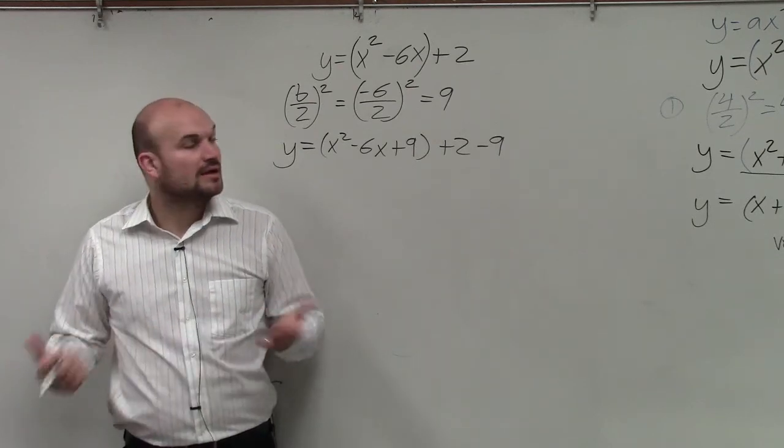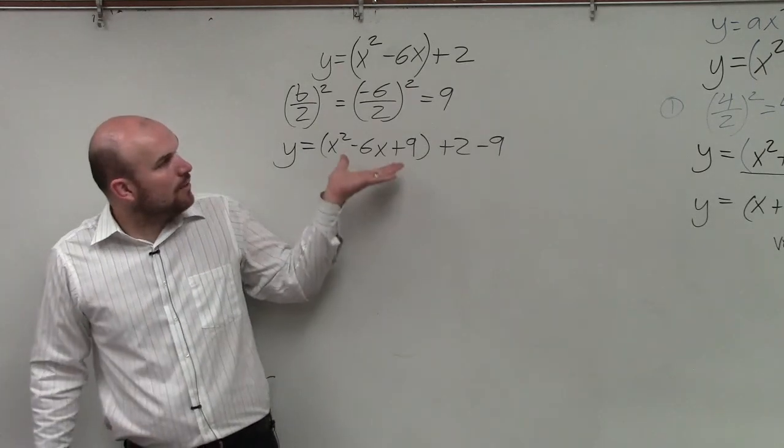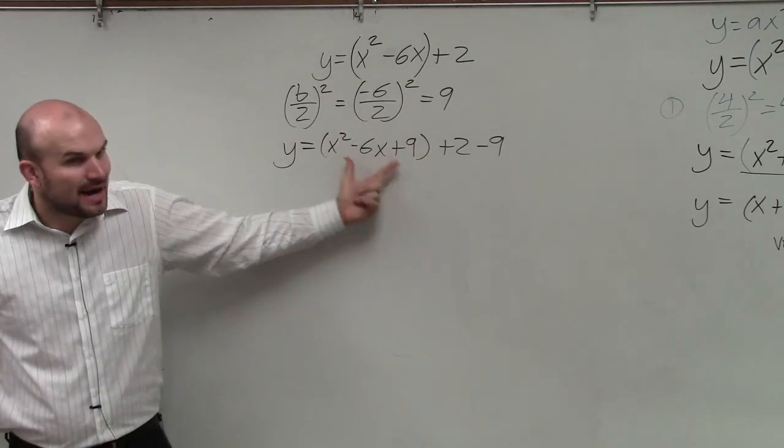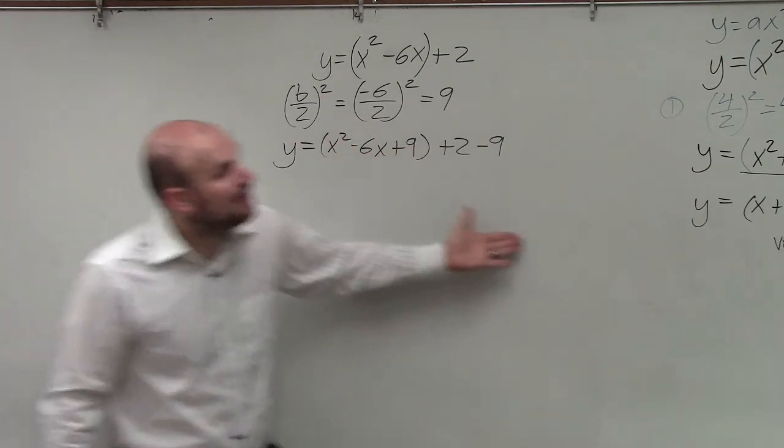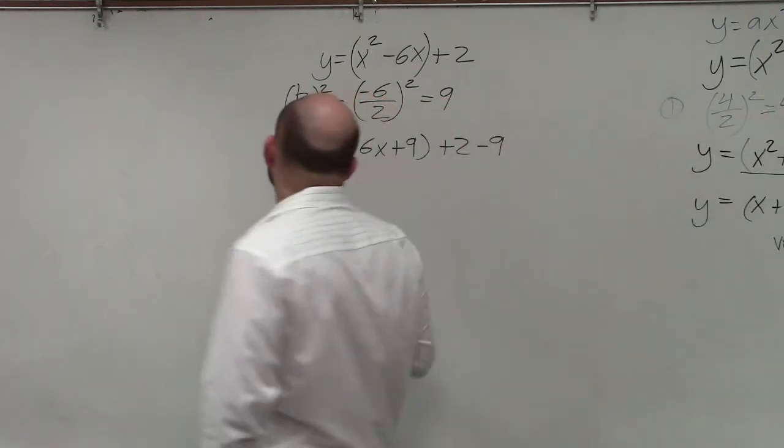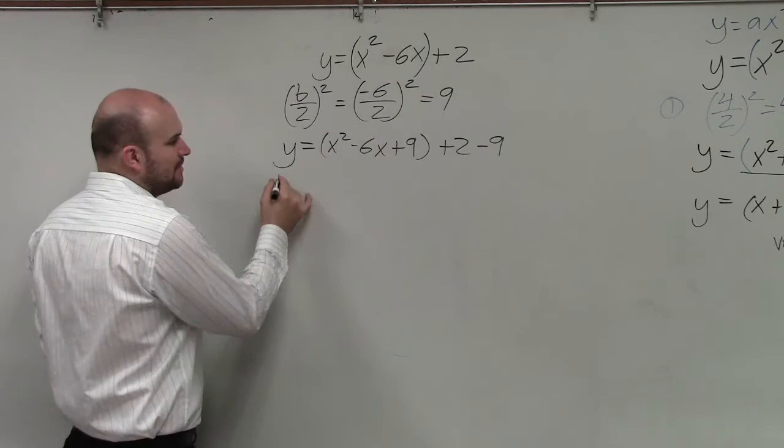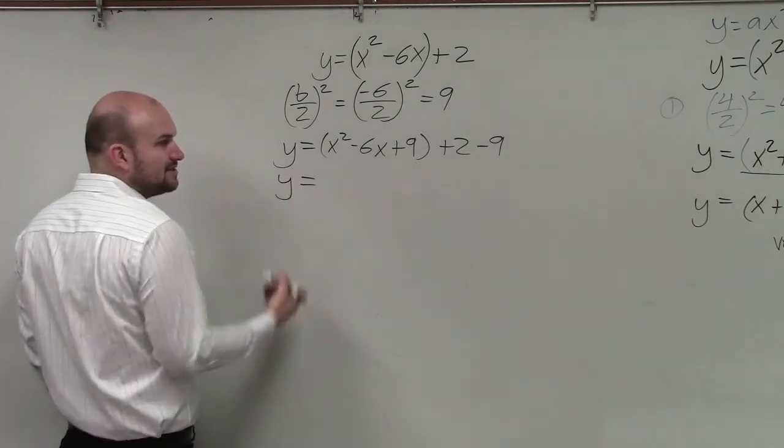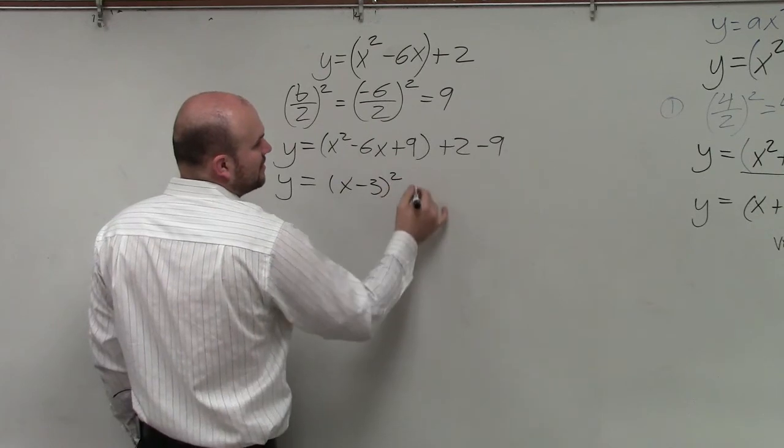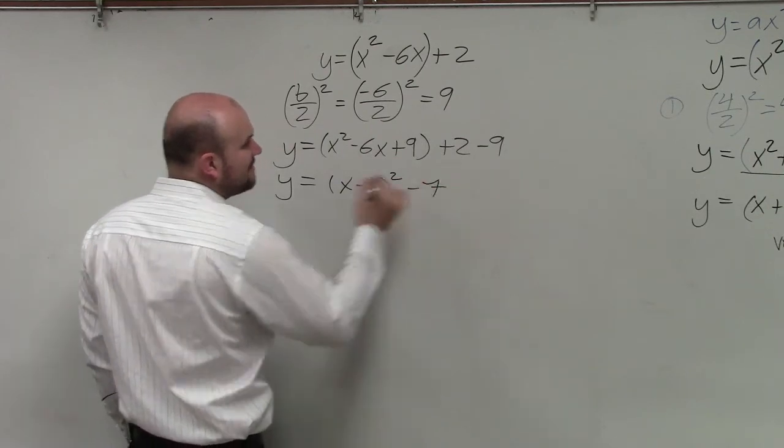Good. Now, the next main important thing is what we have done. Again, the whole purpose of this is to create a binomial squared. Why do we want a binomial squared? Because a perfect square trinomial, we can factor to a binomial squared, which will then put the problem in vertex form. So we've got to know how to factor this, which is just going to be x minus 3 squared. And then this becomes minus 7.